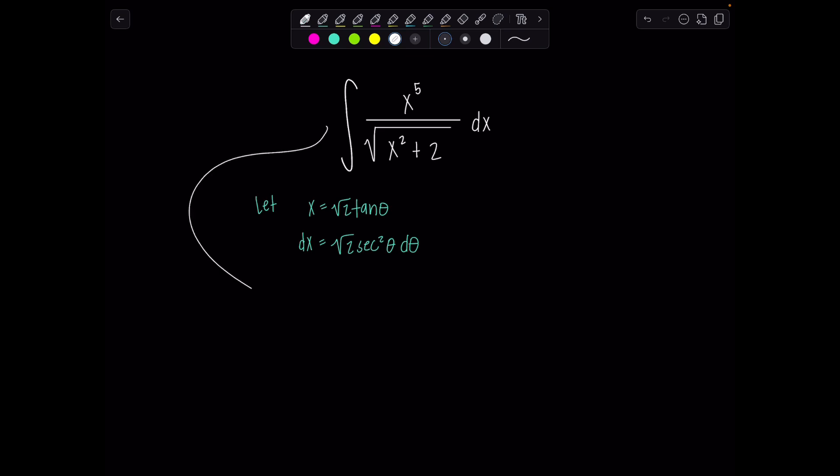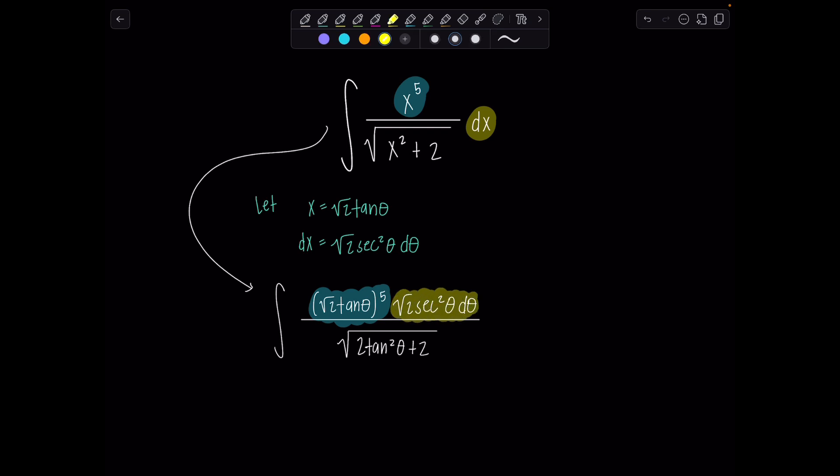Now go back, substitute everything. So we have a new integral all in terms of theta. Instead of x to the fifth up top that's square root of 2 tan theta to the fifth. And then dx is square root of 2 secant squared theta d theta. And then in the denominator we have square root of x squared plus 2. Well x squared is going to be 2 tan squared theta plus 2. Let me finish my color coding party. Now let's clean up as much as possible.